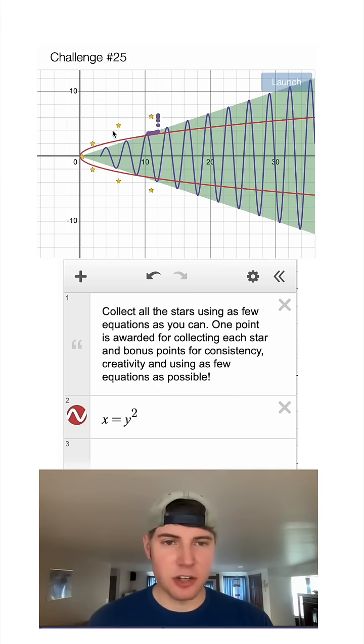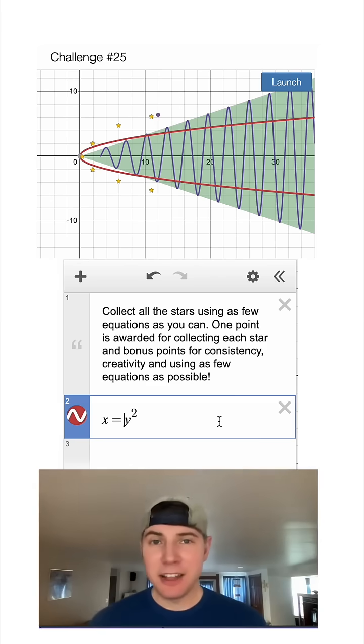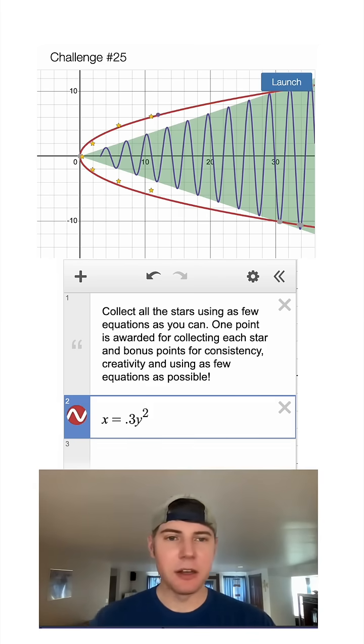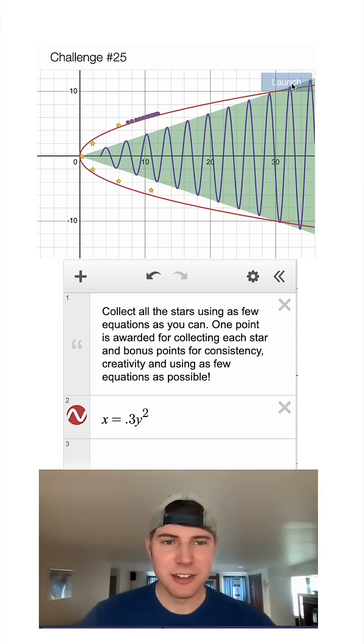We can see if we launch it's going to miss these stars here. We need to make our parabola wider. We want to put a multiplier in front of here. Anything less than 1 will make it wider. So we try 0.6. That's not wide enough. Let's do 0.3. That looks pretty good. Let's hit launch. Perfect.